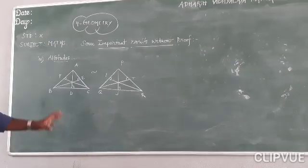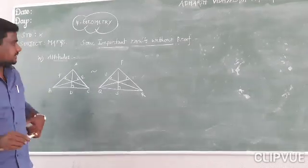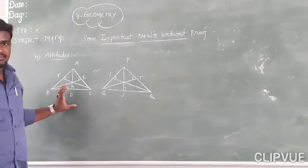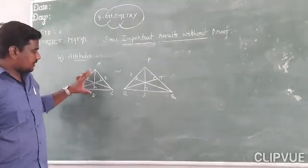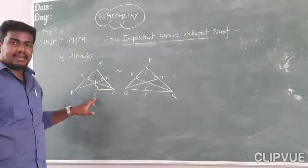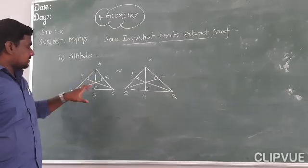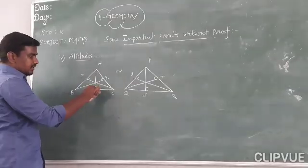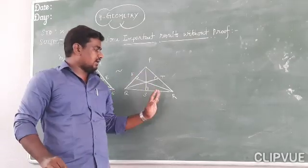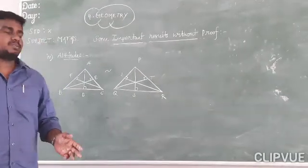Next step: Altitude. The result related to altitude. What is altitude? Altitude is the perpendicular height. If AD is the altitude, it means a straight line segment from one vertex perpendicular to the opposite side. From vertex A to BC — that altitude is AD. From B to AC — that is BE. From C to AB — that is CF. So altitude AD is perpendicular to BC. If two triangles ABC and PQR are similar, then the ratio of the corresponding sides is equal to the ratio of the corresponding altitudes.